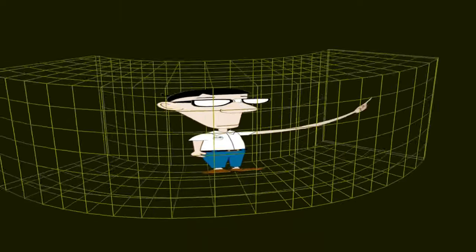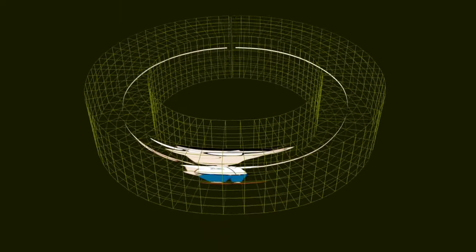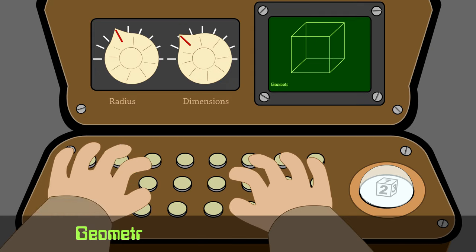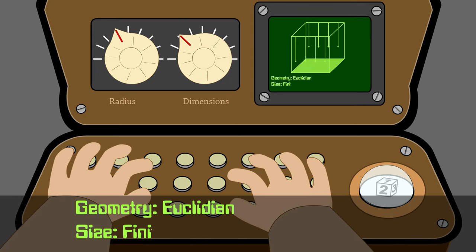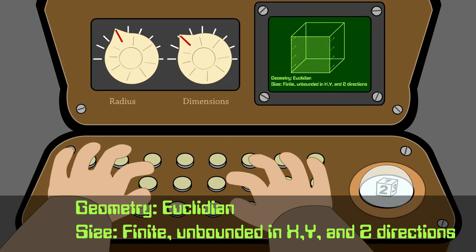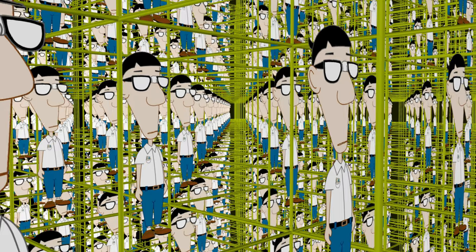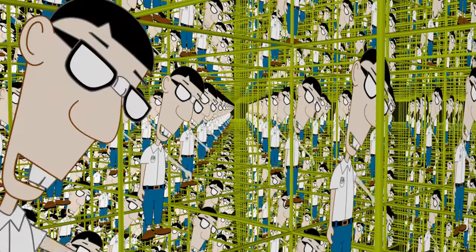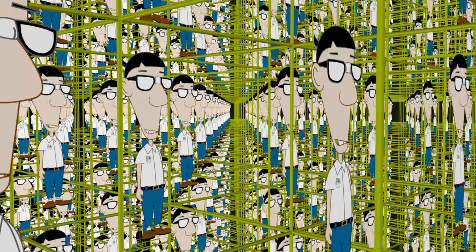We have connected the points on the right boundary to the points on the left boundary, creating the three-dimensional equivalent to the two-dimensional cylindrical space. Now, let's connect the top boundary to the bottom boundary, and the front boundary to the back boundary. Cool!